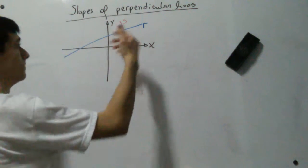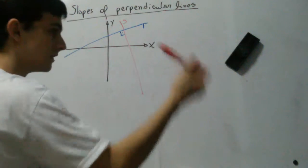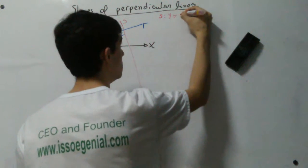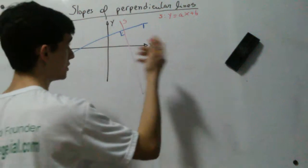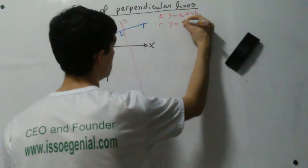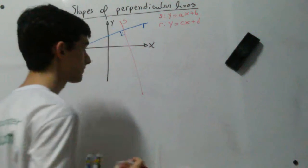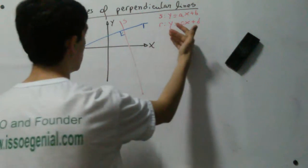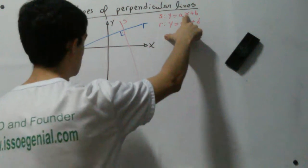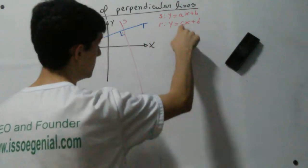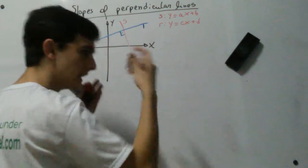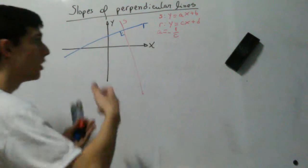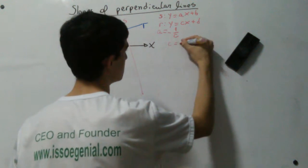Here we have two perpendicular lines, S and R. The equation of line S is Y = AX + B, and the equation of line R is Y = CX + D. The slope of line S is A — the number that multiplies X — and the slope of line R is C. The relation between A and C is that A equals negative 1 over C, or equivalently, C equals negative 1 over A.